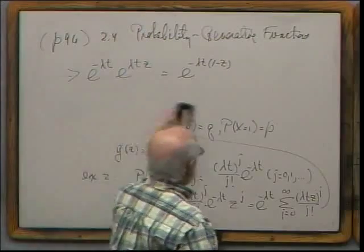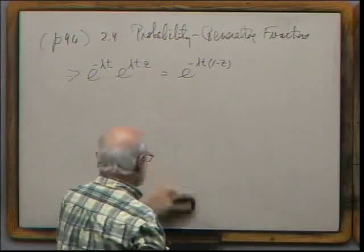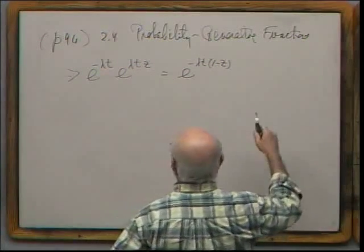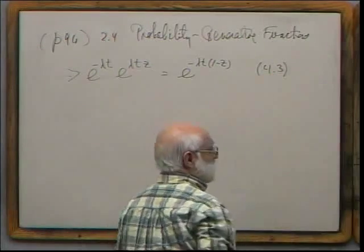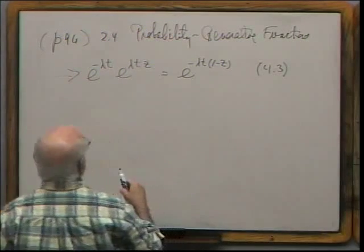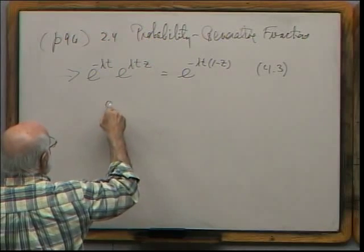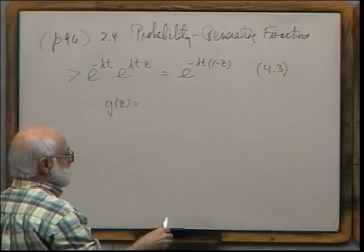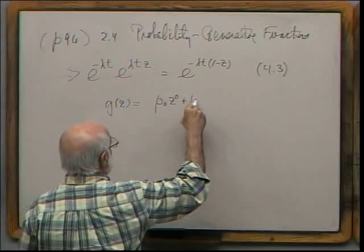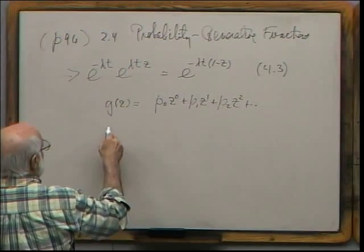Let's look at some properties. Here is the generating function in general of a non-negative integer-valued random variable: g(z) = p0·z^0 + p1·z^1 + p2·z² + ⋯. If I take the derivative of that, I get p1 + 2p2·z + 3p3·z² + ⋯